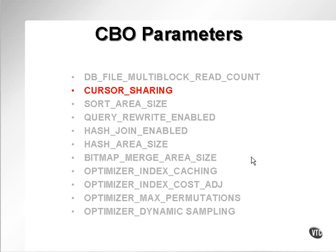CBO, or Cost Based Optimization Parameters. We've looked at some parameters related to the optimizer itself — one of those was cursor sharing, which we won't discuss in this movie. We have various parameters that affect the way the optimizer uses statistics. Cost Based Optimization uses statistics in order to decide how to execute SQL statements.